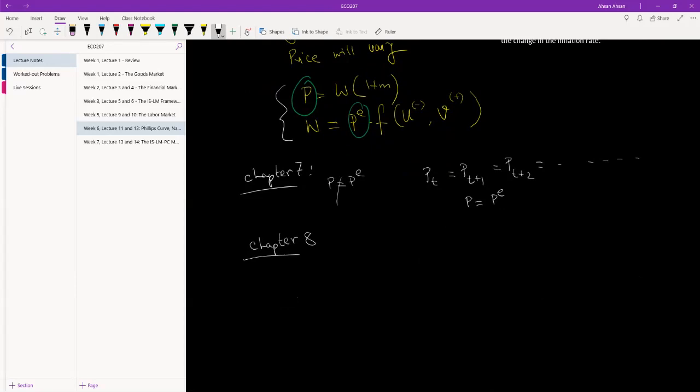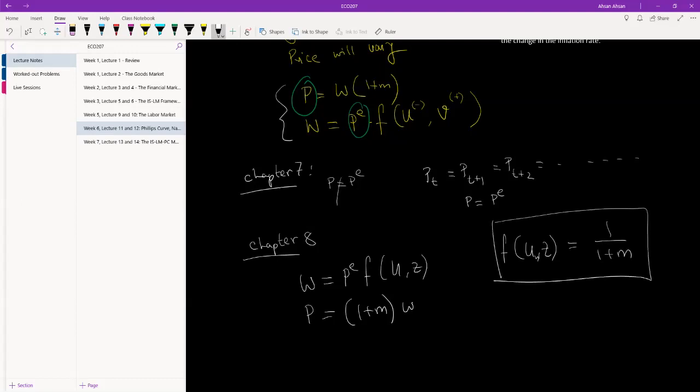Let's start Chapter 8. In Chapter 7, we had derived two relations: P^e function of u and z, and P equals 1 plus m. Of course, in Chapter 7 we did not have P^e, we just had P. As a result, we were able to derive the equilibrium condition, the natural unemployment rate, which was u_n equals z equals 1 by 1 plus m. We were able to derive this only because we assumed P is equal to P^e. We do not have that assumption anymore.